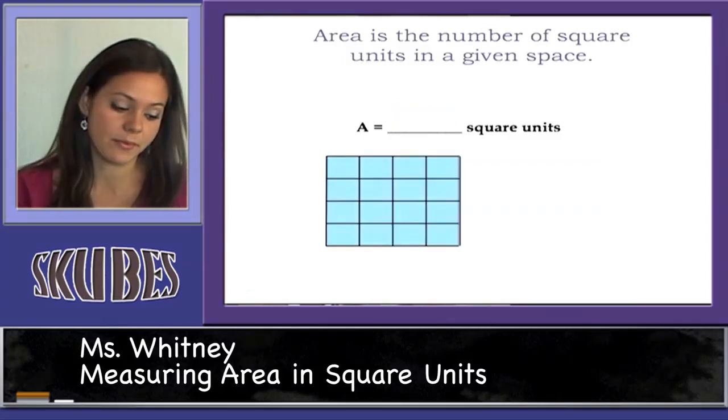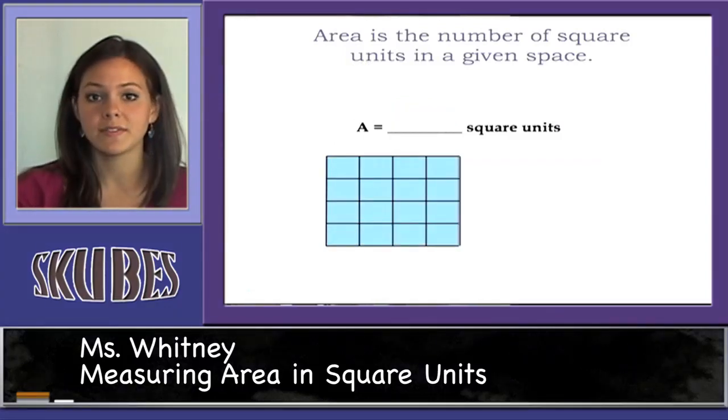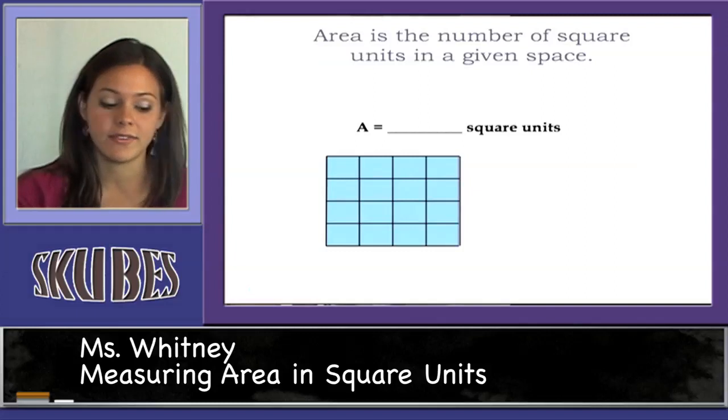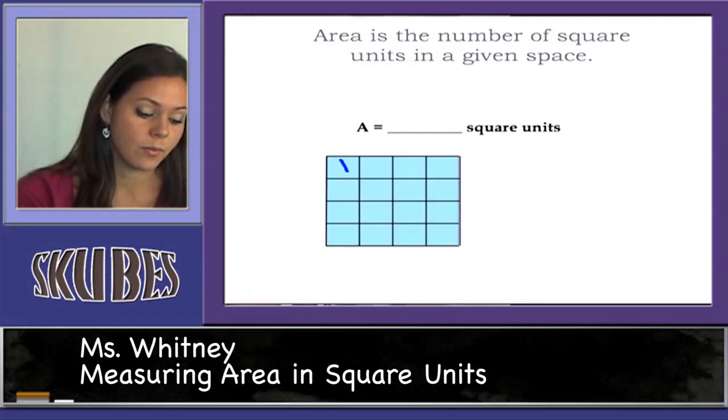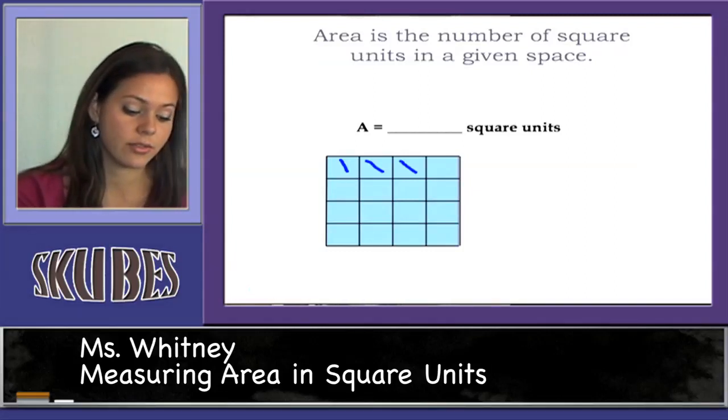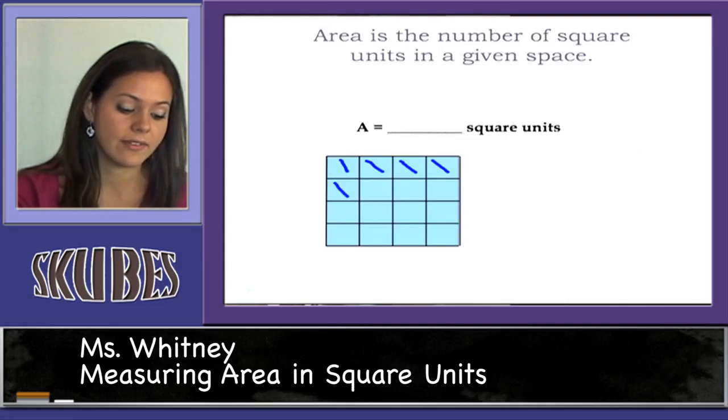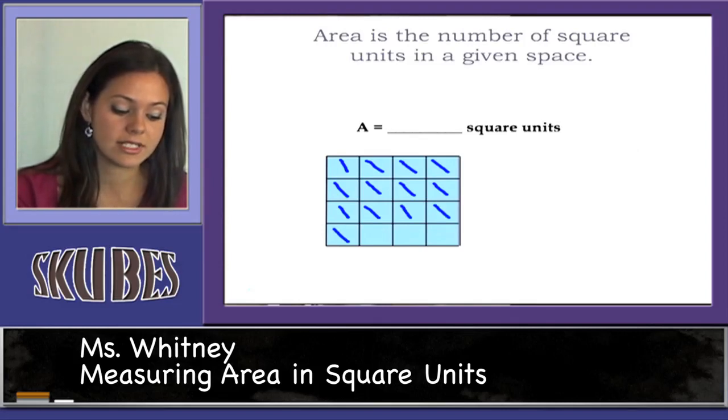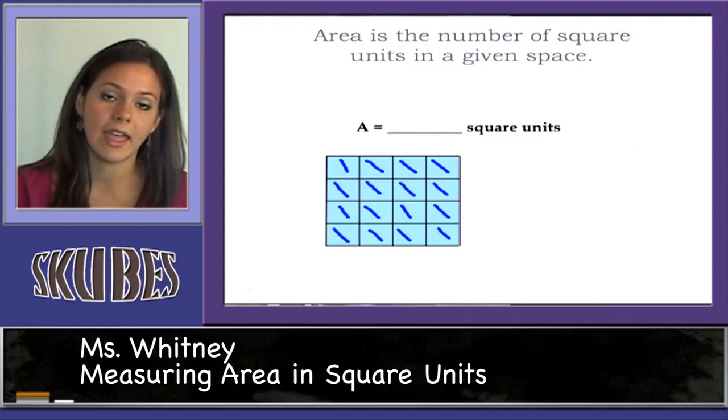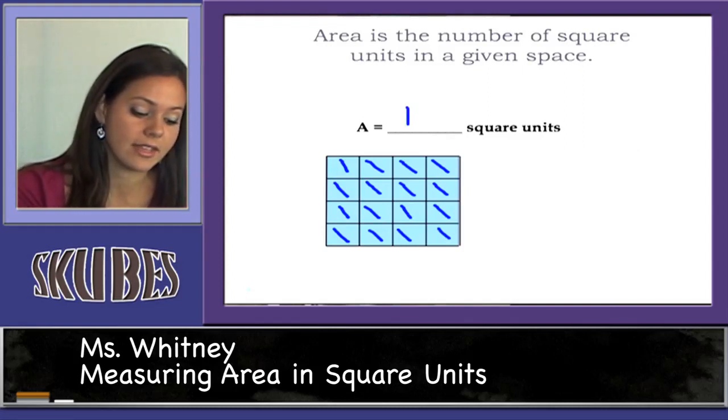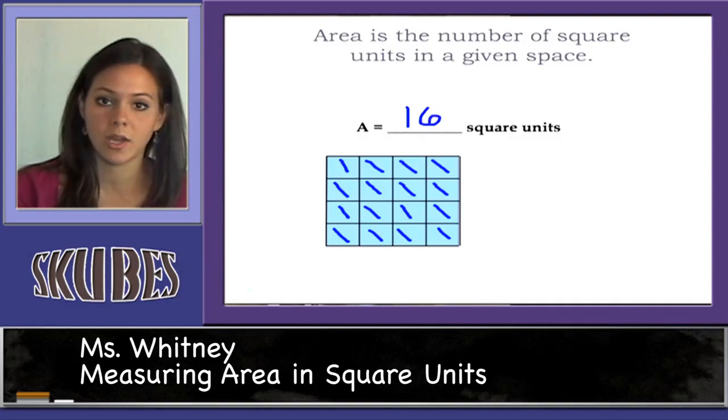Here's another example. Let's count the number of square units to find the area of this rectangle. 1, 2, 3, 4, 5, 6, 7, 8, 9, 10, 11, 12, 13, 14, 15, 16. The area of this rectangle is 16 square units.